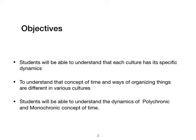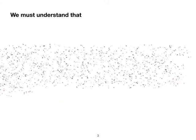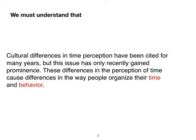We'll be discussing the polychronic and monochronic concept of time — how it shapes our relationships, how it affects the way we organize things, how it shapes culture as a whole, and how we can categorize people into monochronic and polychronic. Cultural differences in time perception have been cited for many years, but this issue has recently gained prominence, and these differences cause differences in the way people organize their time and behavior.